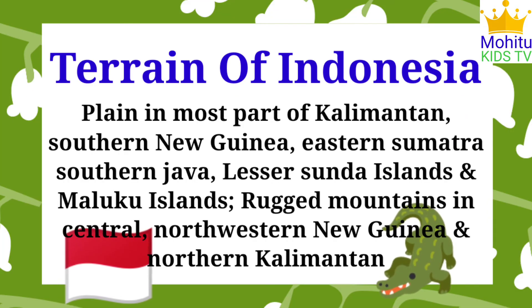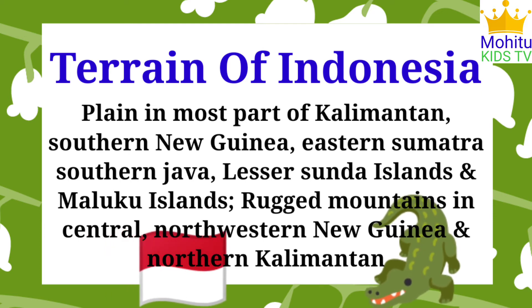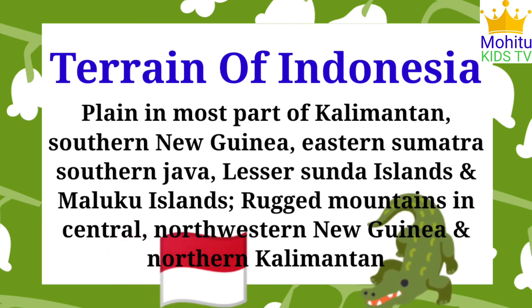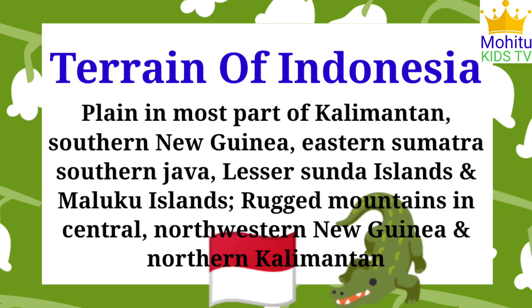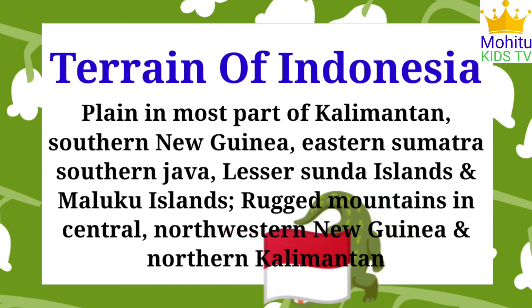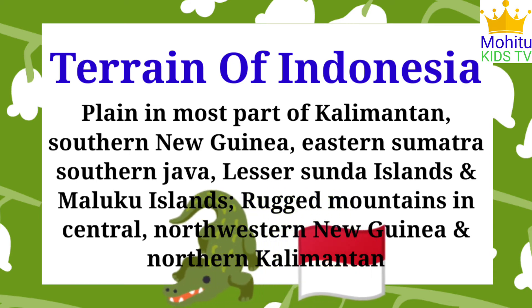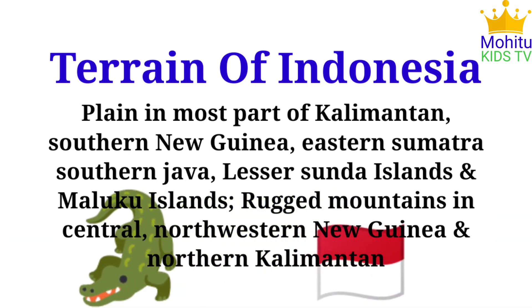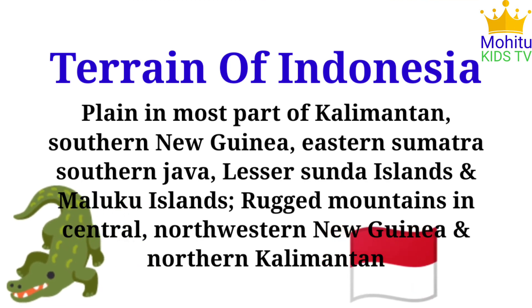The terrain of Indonesia consists of plains in most parts of Kalimantan, southern New Guinea, eastern Sumatra, southern Java, the Lesser Sunda Islands and Maluku. There are rugged mountains in central and northwestern New Guinea and northern Kalimantan.